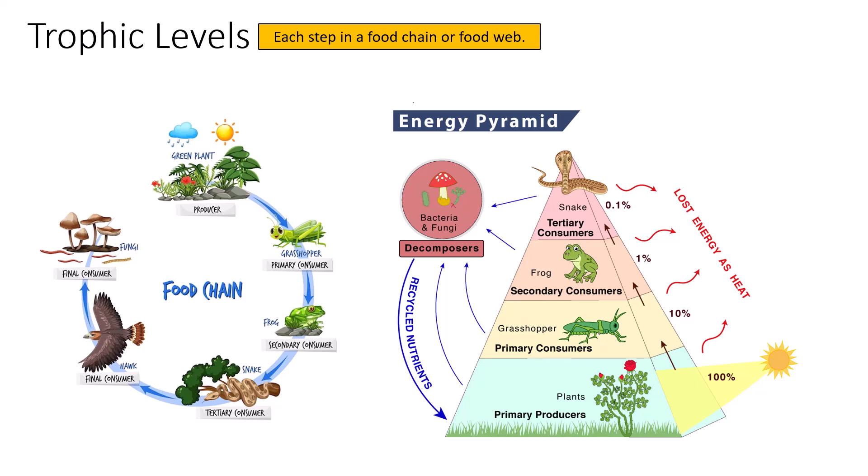Of that 45%, roughly 30–35% of the energy is used by the grasshopper to keep it alive: normal cellular energetics, producing energy, moving materials around cells, muscle contraction — all of those things take energy and it's gone. That leaves roughly 10% from that original 100% which is stored and can therefore be consumed by the next organism, which is the frog at the secondary consumer level.